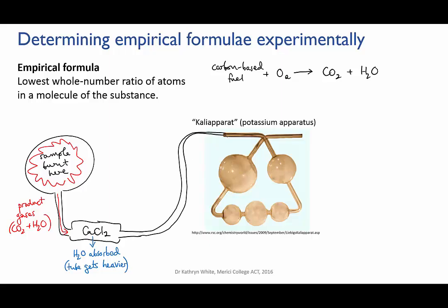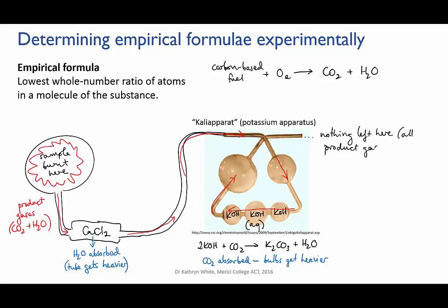The remaining gas would then flow through these bulbs, with the lower ones containing potassium hydroxide solution. The potassium hydroxide absorbs carbon dioxide by reacting with it to produce potassium carbonate. So by the increase in mass of this part of the apparatus, the scientist could work out how much carbon dioxide had been produced, and hence what mass of carbon was in the original sample.